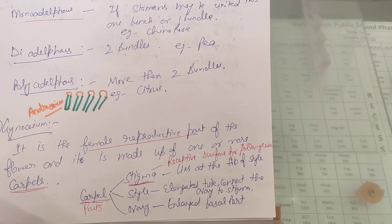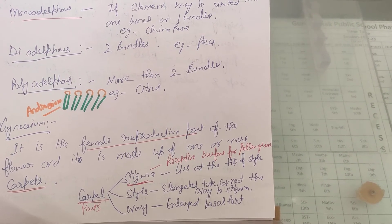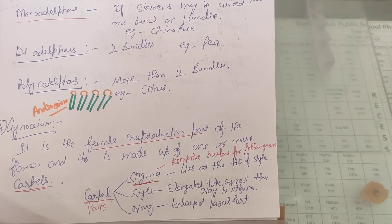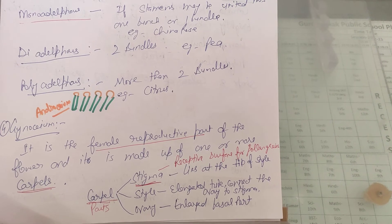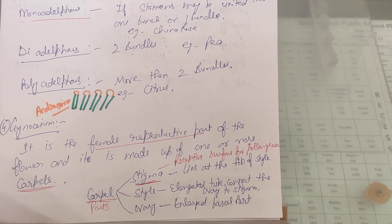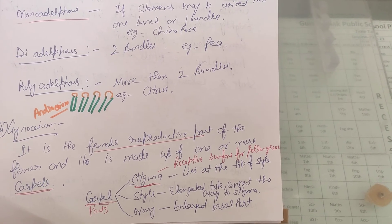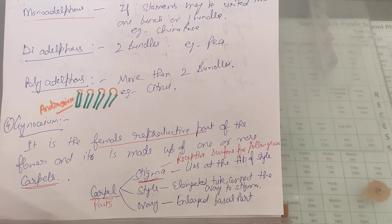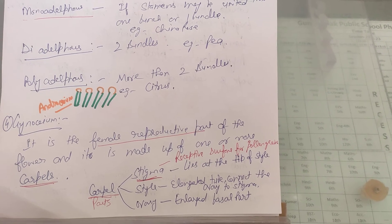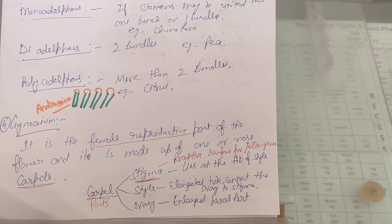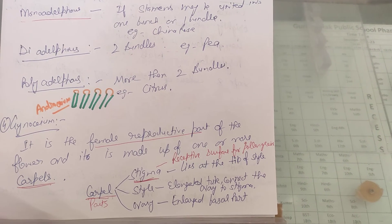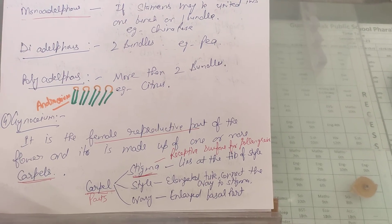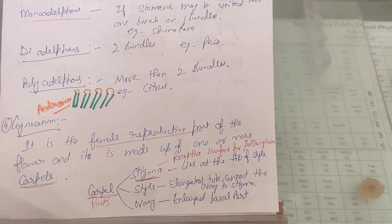The ovary is the basal part at the bottom. Then the style comes along — it is an elongated tube which connects the ovary to the stigma. The stigma is present at the tip of the style and is the receptive surface for pollen grains, meaning this is where pollen grains are attached.